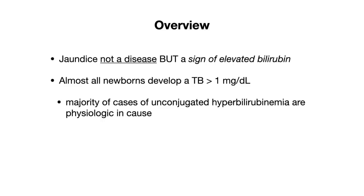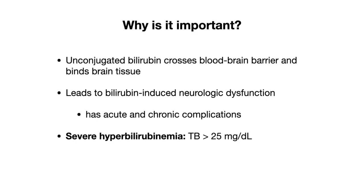When we talk about jaundice, it's important to know that jaundice is not a disease but a sign of elevated bilirubin, and it's important to understand where this elevated bilirubin is coming from. Almost all newborns will develop a total bilirubin of greater than one, which is the upper limit of normal in adults. The majority of cases of unconjugated hyperbilirubinemia are physiologic or benign in cause. The significance is that unconjugated bilirubin is lipid soluble, so it can cross the blood-brain barrier and bind to brain tissue. This can lead to bilirubin-induced neurologic dysfunction, which has both acute and chronic complications. Severe hyperbilirubinemia is defined as a total bilirubin of greater than 25, and this is when you start expecting neurologic symptoms to develop, but your goal is to prevent bilirubin from even reaching that level in the first place.